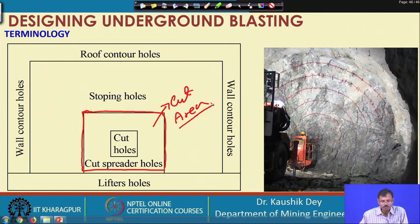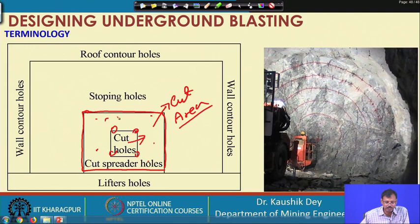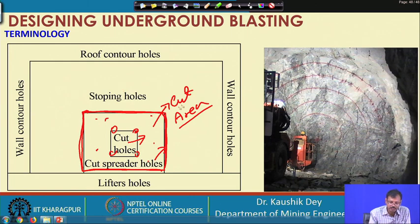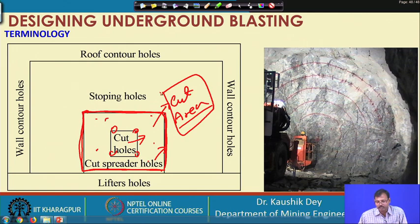In the cut area we drill the first holes — which are drilled and blasted — called cut holes. The other holes which are gradually blasted until achieving the desired length of excavation are called cut spreader holes. It is expected that in the cut area the desired length of advance is achieved, and then the other holes are placed so that that same advance can be kept consistent for the remaining face area. All design factors we discuss in this class and the next are basically for designing the cut area only.